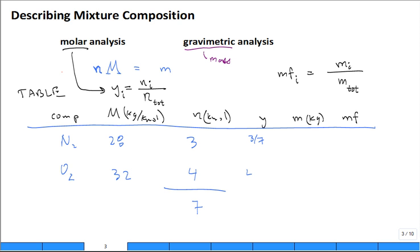What is the mass? If I had 3 kilomoles of nitrogen, it's 3 times 28, and 4 times 32. If you sum that up you get the total amount of mass. Then to get the mass fraction, it would be 3 times 28 divided by that sum of the mass, and 4 times 32 divided by the sum of the mass. So you can go between mole fraction and mass fraction using a table. It helps organize the information.